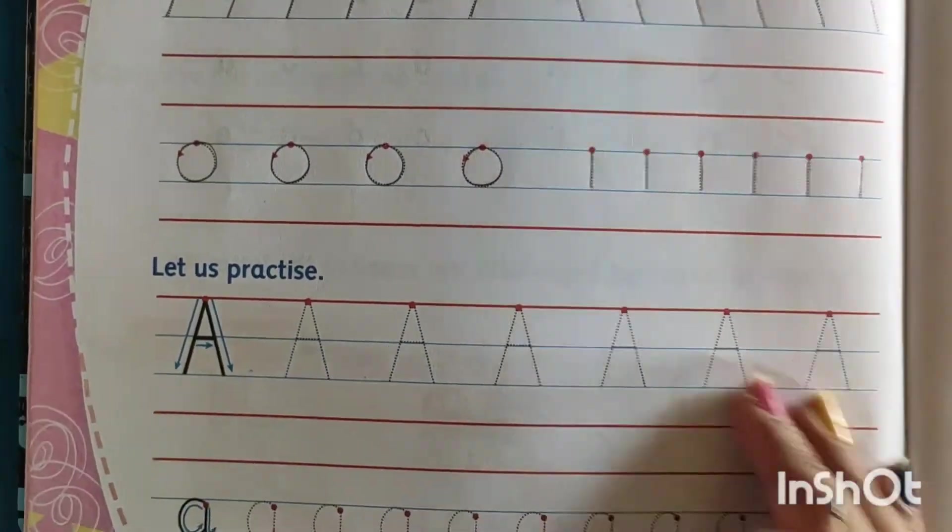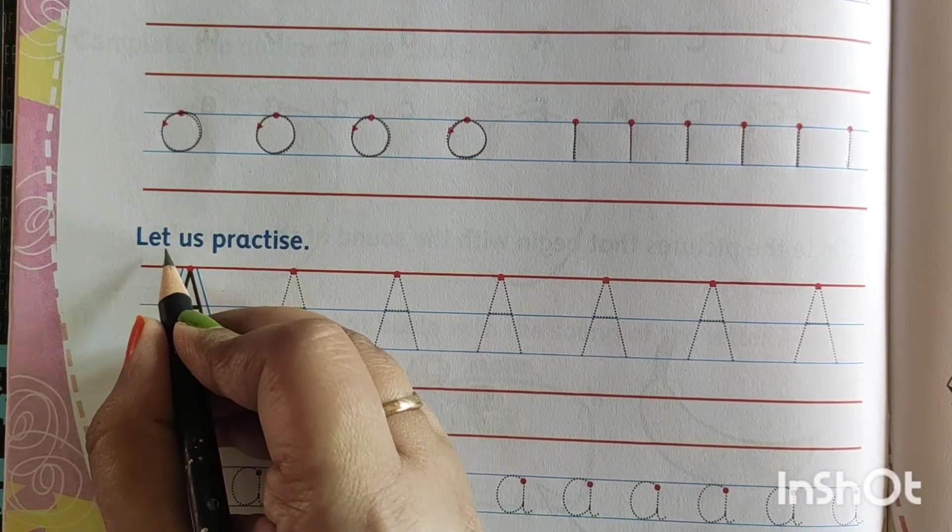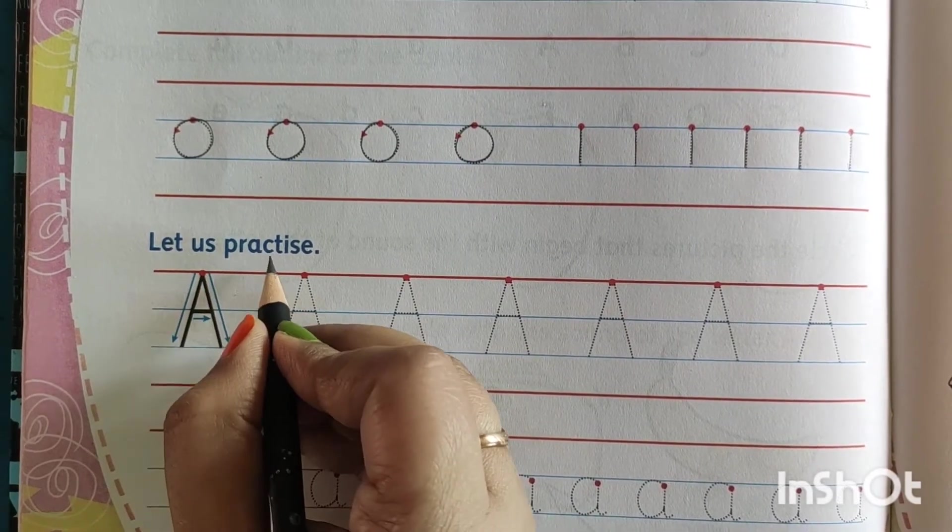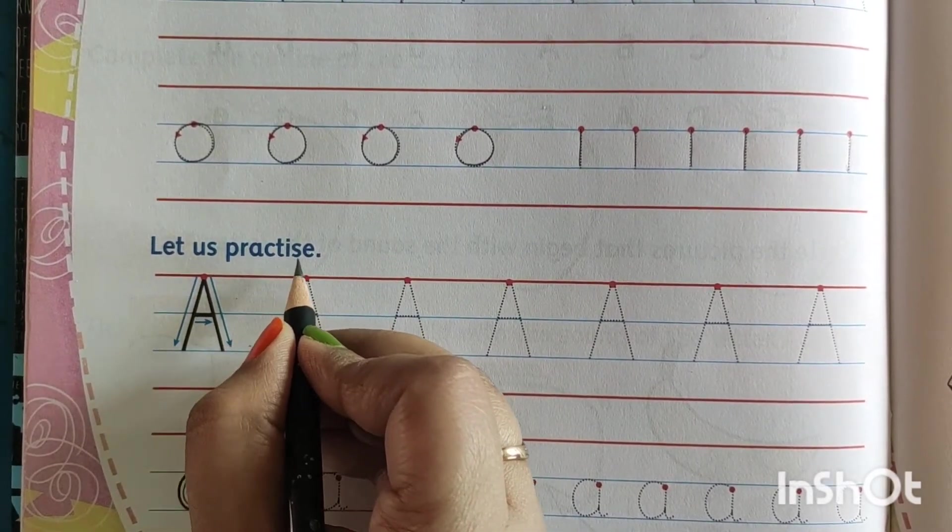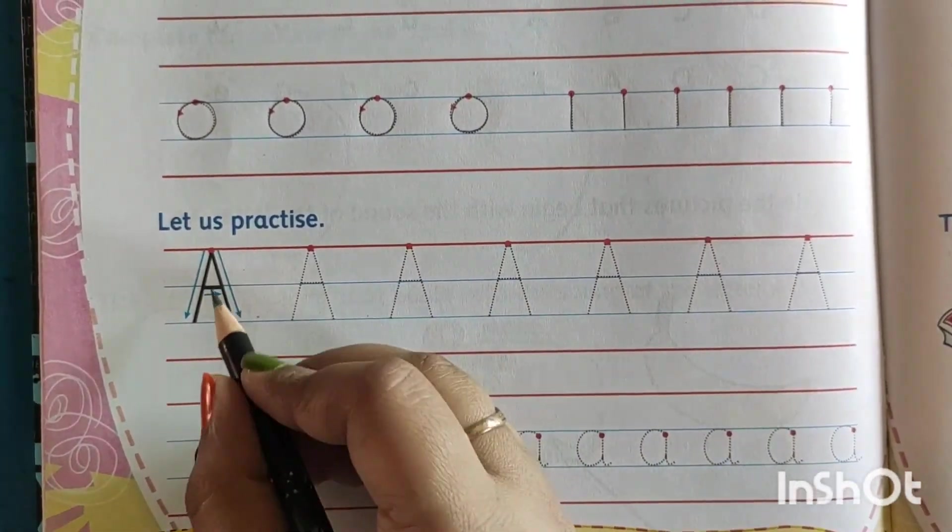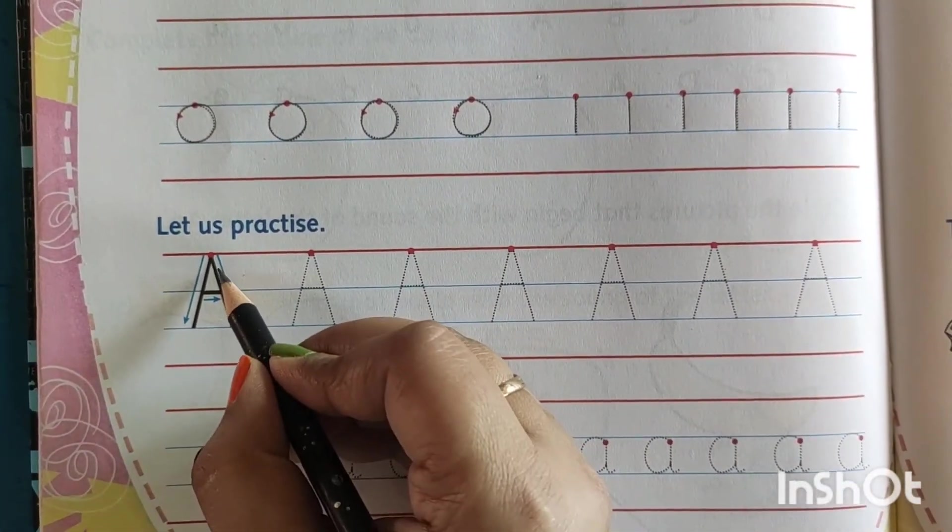Now next topic is let us practice. L-E-T let, U-S us, practice P-R-A-C-T-I-S-E. So now we are going to write capital A. And how it will start?